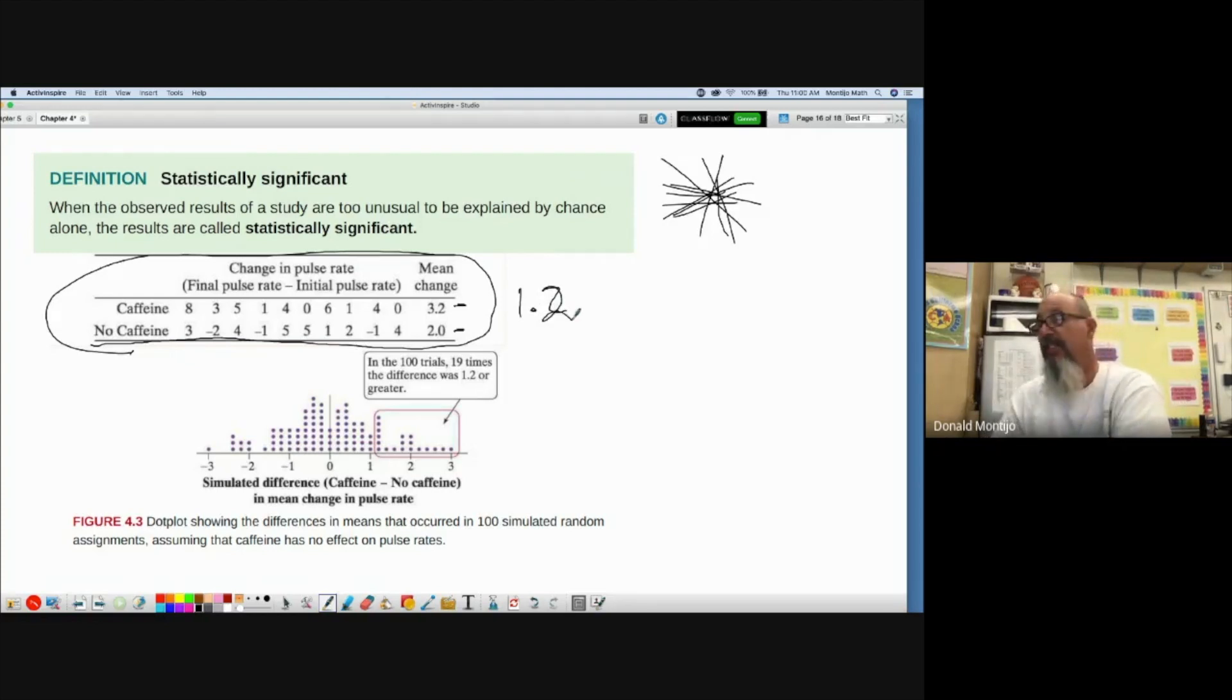Now, is that difference statistically significant? Could that difference just be due to random chance - which 10 students got the caffeine? They might already have had a faster heart rate regardless of caffeine. Or the students who got no caffeine might already have been calmer with a lower heart rate. Is this difference large enough to say it's not due to chance alone? Or could this just be due to random chance and who went into which group?